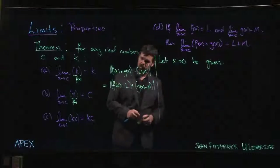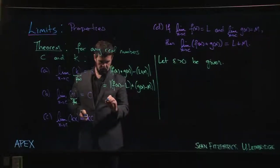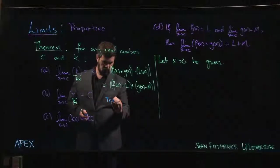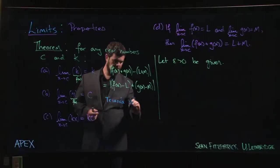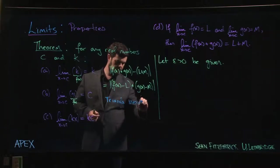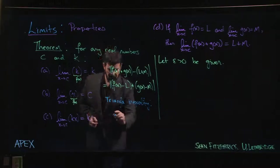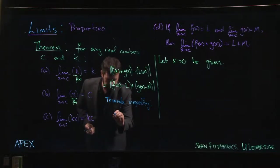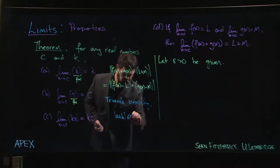The triangle inequality says that for any real numbers a and b, the absolute value of a + b is always less than or equal to |a| + |b|.